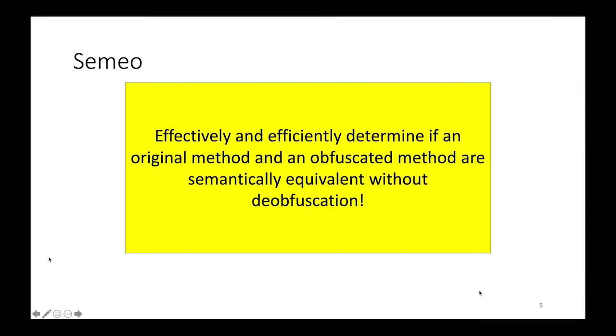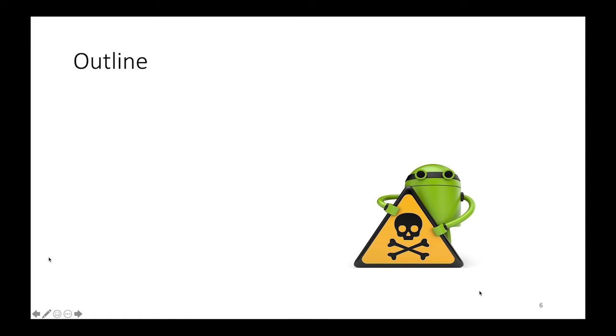So what we did in this work is we create a system called SEMIO. The goal of SEMIO is to help analysts identify repackaged components in spite of obfuscation. By using SEMIO, analysts can focus their effort on understanding the malicious code instead of trying to find the needle in the haystack. As we will show, SEMIO is effective, is efficient, it can identify semantically equivalent methods without having to de-obfuscate them first.